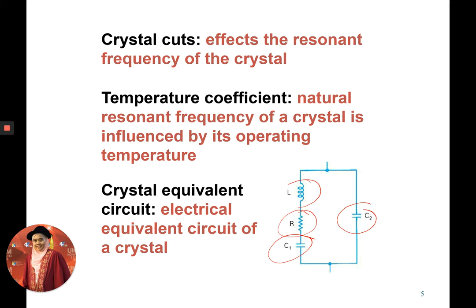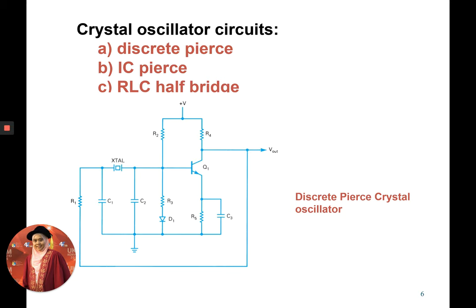There are three types of crystal oscillator circuits. One is called discrete Pierce, and the discrete Pierce crystal oscillator is given by this circuit configuration, which uses a crystal symbol (X-tal). The others are IC Pierce and RLC half-bridge configurations.